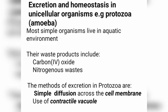Now, most simple organisms, or what we call unicellular organisms, live in an aquatic environment — an environment of water. In other words, their cells are surrounded by water. The waste products include, one, carbon dioxide, and two, nitrogenous wastes.